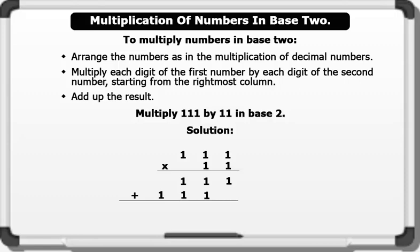Now let's add the partial products starting from the right. We bring down 1. 1 plus 1 equals 2; 2 divided by 2 equals 1 remainder 0; write down 0 and carry 1. 1 plus 1 plus 1 equals 3; 3 divided by 2 equals 1 remainder 1; write down 1 and carry 1. 1 plus 1 plus 1 equals 3; write down 1 and carry 1. Since there is nothing more to add, write down the remaining 1.